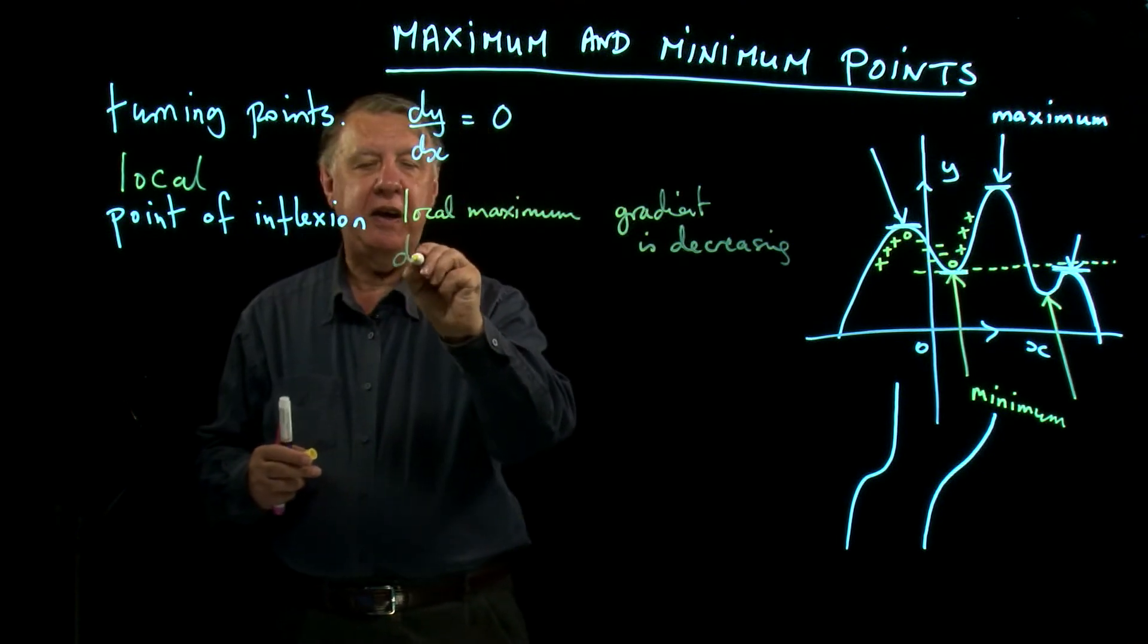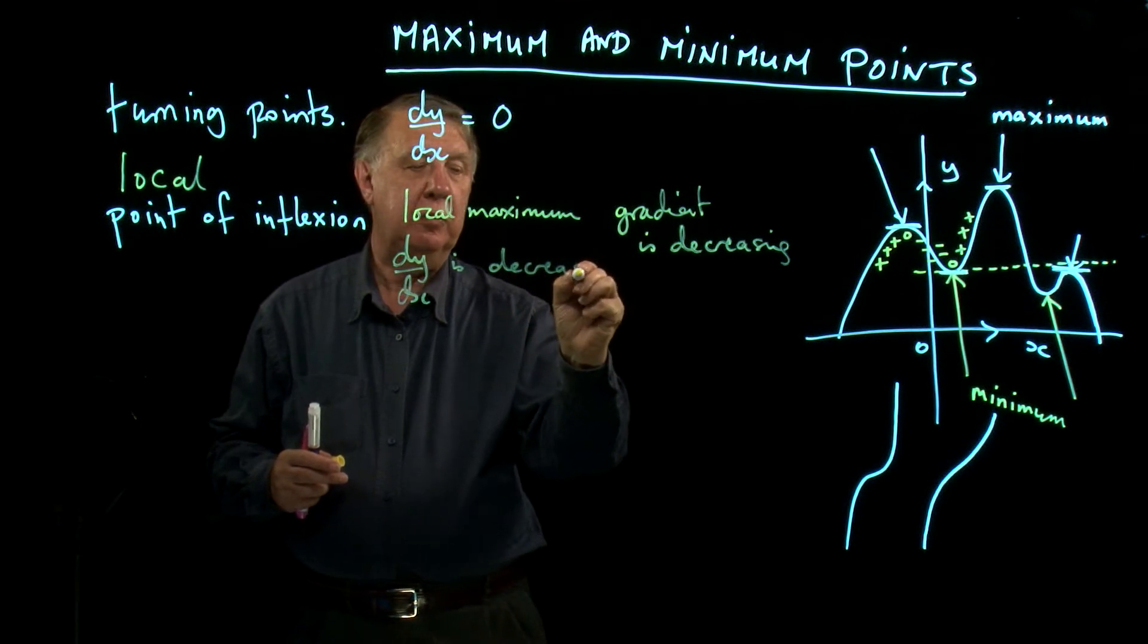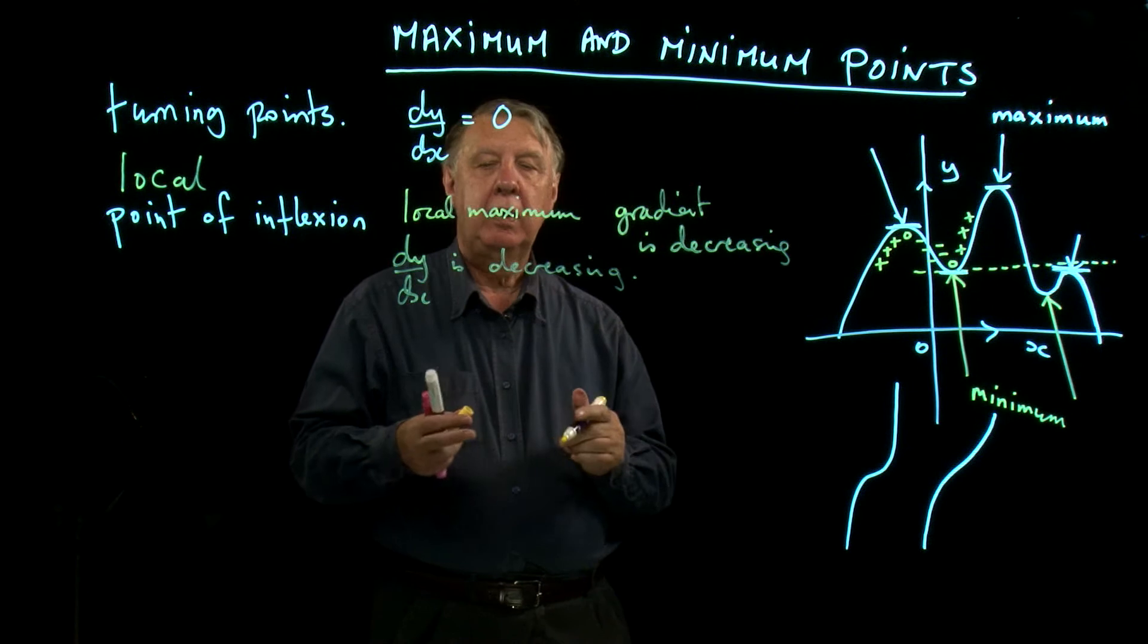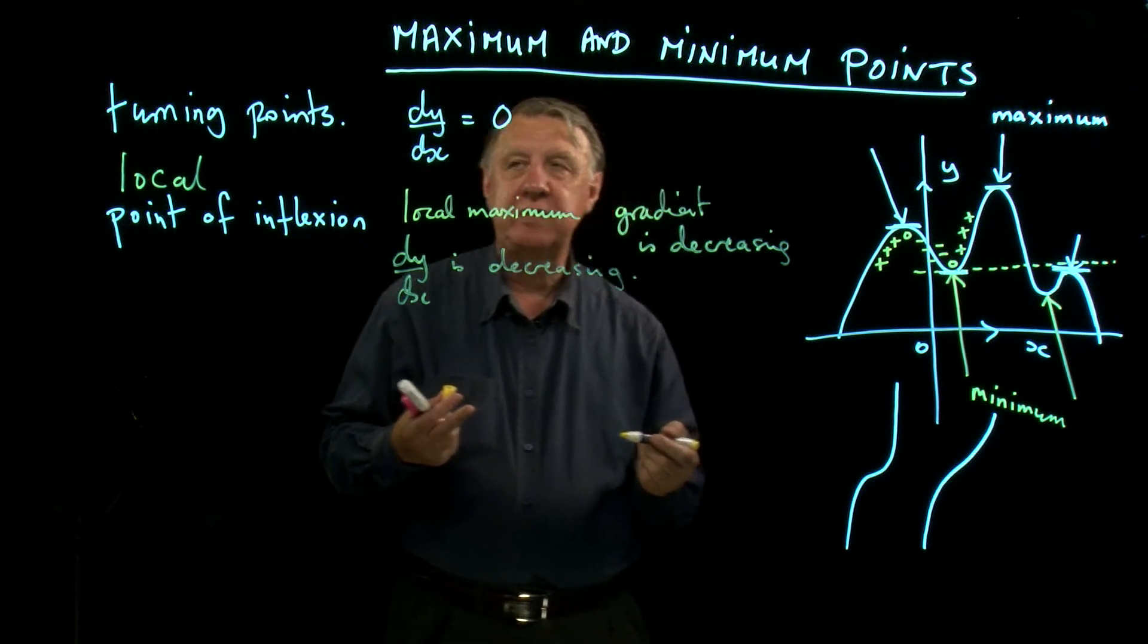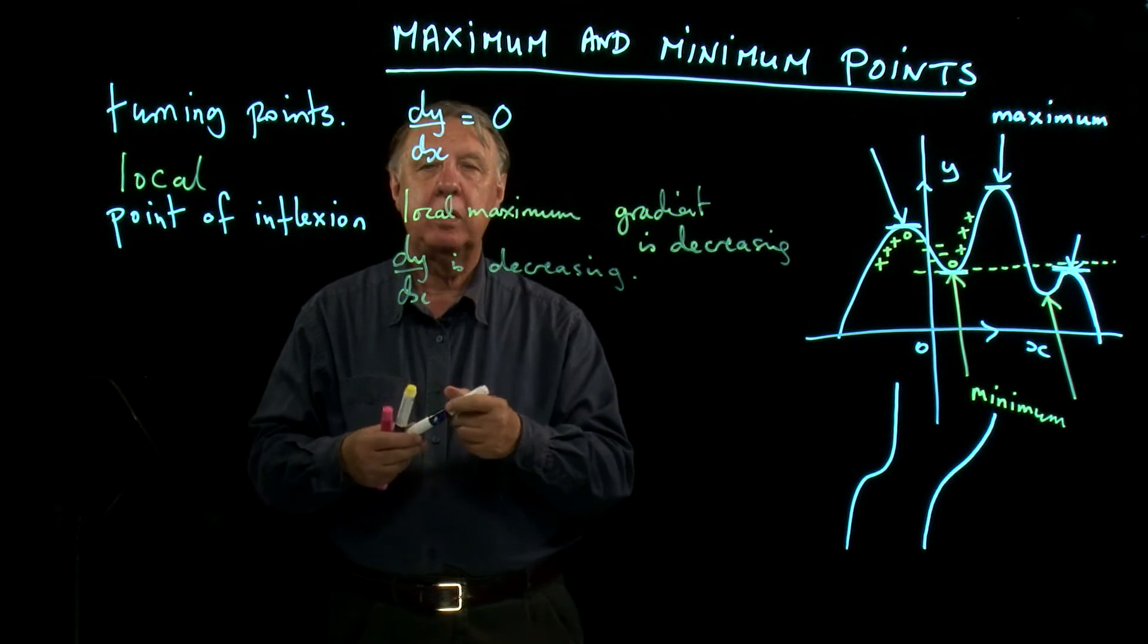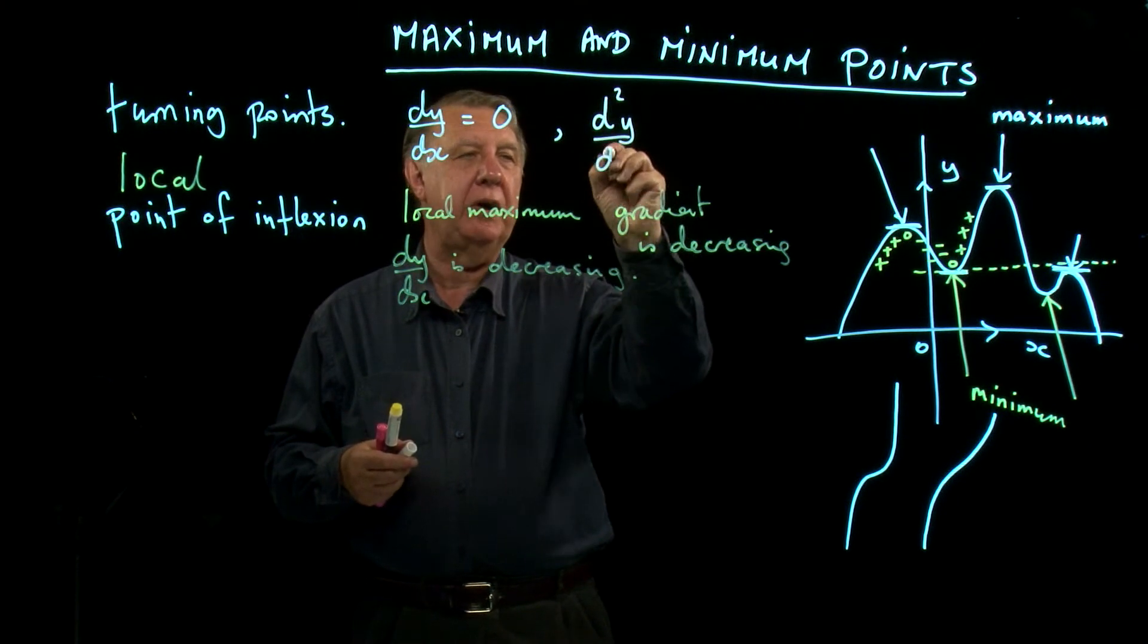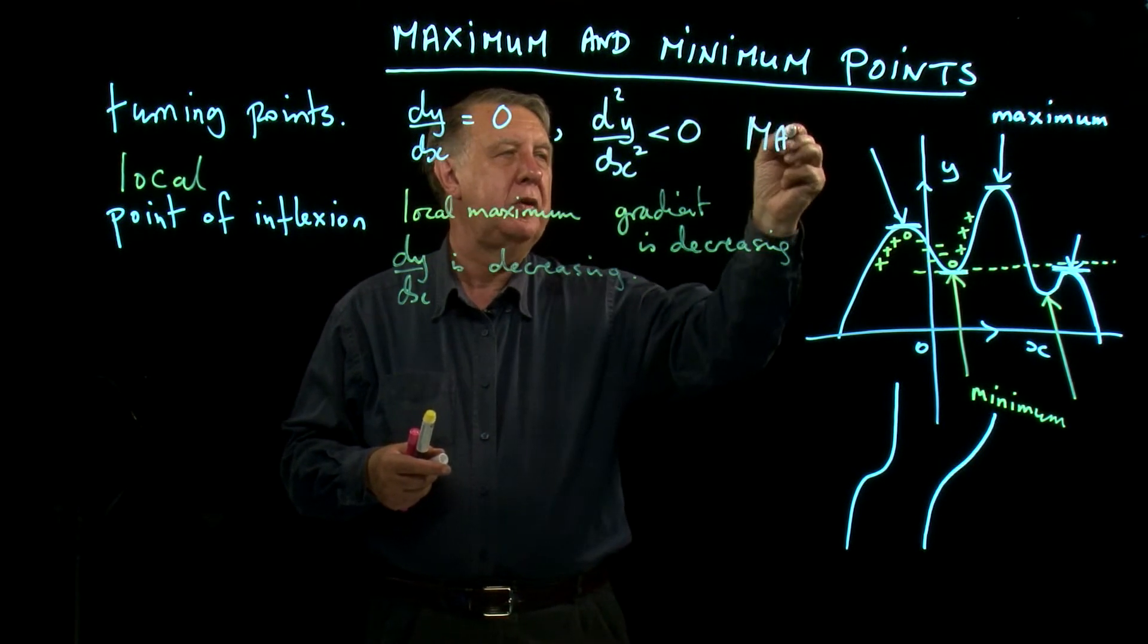It's going from positive to negative. So at a local maximum, the gradient is decreasing. In other words, dy/dx is decreasing. So the rate at which the gradient is changing is negative, and if you remember, we have a symbol for the rate at which the gradient is changing—that's d²y/dx². So at a local maximum, we have dy/dx = 0 and d²y/dx² is negative. This is what happens at a maximum.